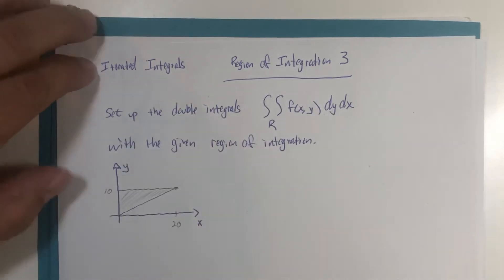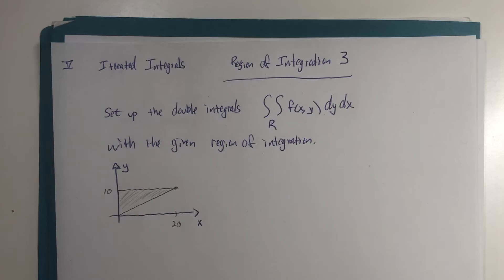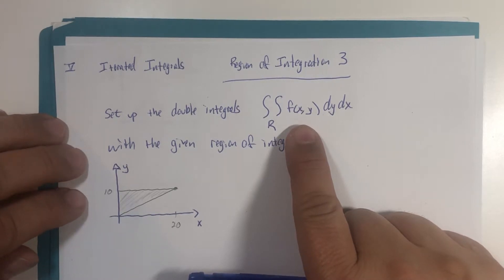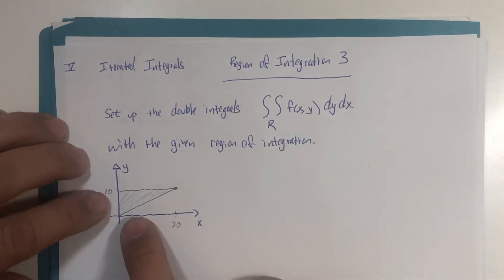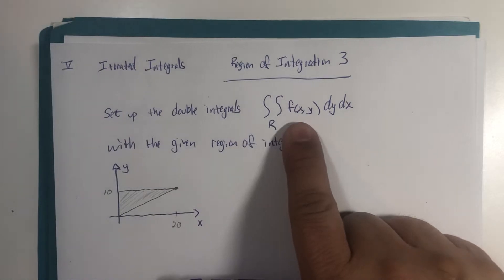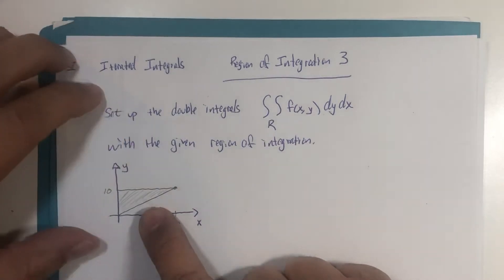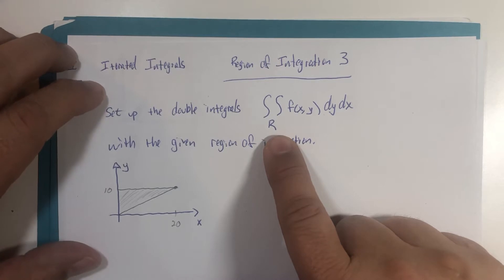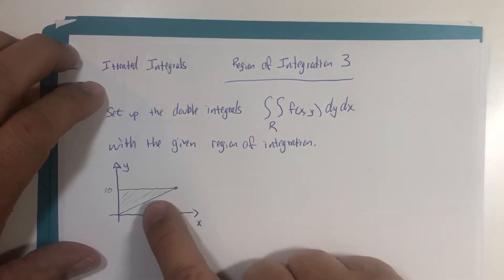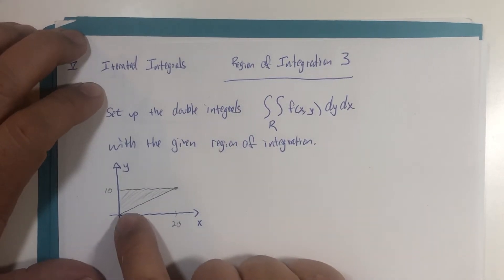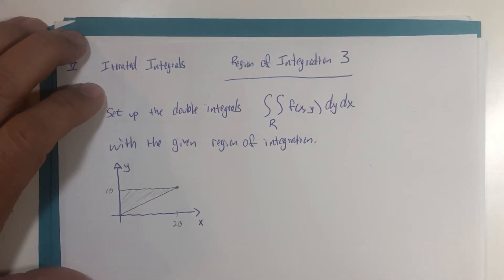We are going to be looking at setting up a double integral with a function that's unknown, could represent dimension number three, and this is going to represent a region of integration. Again, the function is some third dimension that might be above this triangle. This r here, it's a notation I haven't shown yet, is short for the region of integration, which would refer to this two-dimensional triangle right here. And let's just assume that is a line segment. So before we get into setting up the integral, let me just remind you of a couple of details.